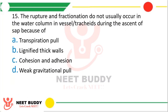Question 15: The rupture and fractionation do not usually occur in the water column in vessels and tracheids during the ascent of sap because of — transpiration pull, lignified thick walls, cohesion and adhesion, or weak gravitational pull. The correct answer is option C, cohesion and adhesion.